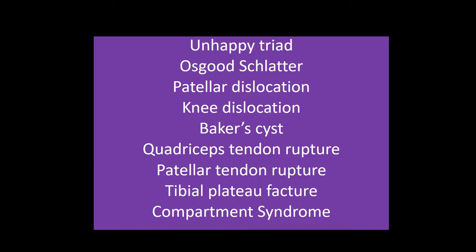For the knee: ACL, MCL, and medial meniscus tear together are called the unhappy triad. Meniscal tears often cause clicking, catching, or locking of the joint during motion. Osgood-Schlatter disease is anterior knee pain localized to the tibial tuberosity, exclusively in adolescents; treatment is NSAIDs and rest. Patellar dislocation almost always is lateral — reduce it by extending the knee and manually displacing the patella medially. These commonly reoccur.